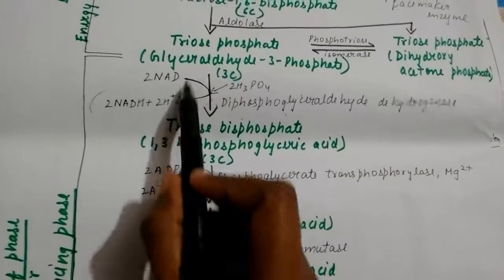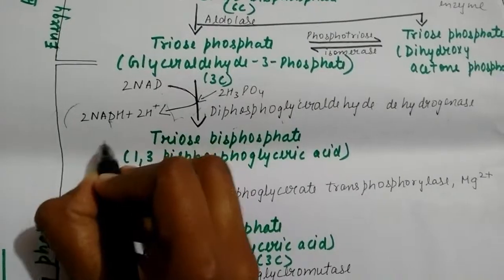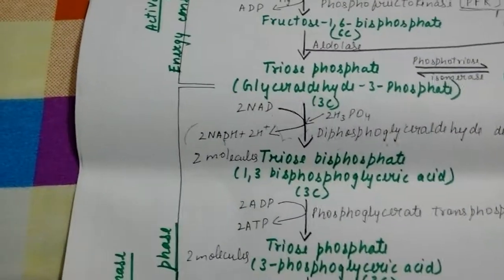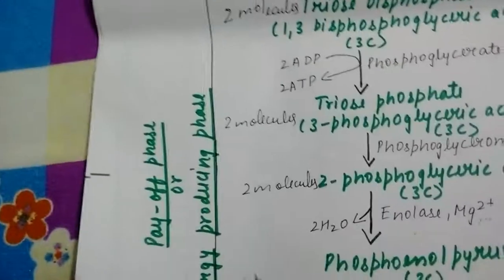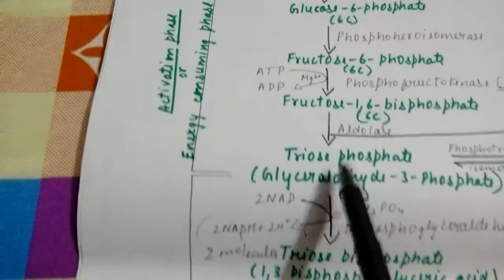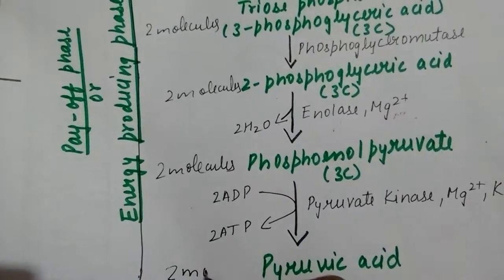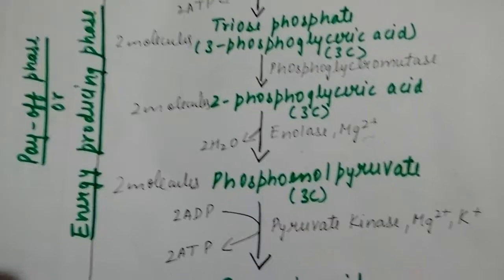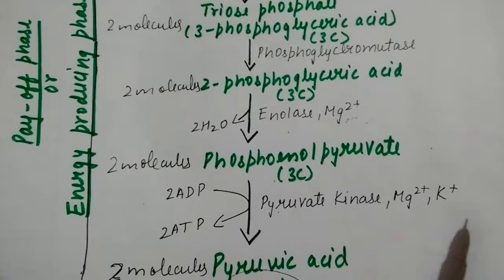Phosphoenolpyruvate is converted into pyruvic acid — two molecules of pyruvic acid. All intermediates from the triose phosphate stage are formed as two molecules each, because these are all three-carbon compounds derived from the six-carbon glucose. So the breakdown of six-carbon glucose results in two molecules of pyruvic acid. This process takes place in the presence of pyruvate kinase, and here again two molecules of ATP are synthesized.